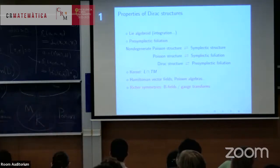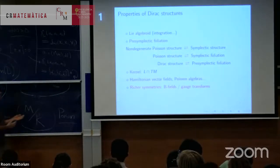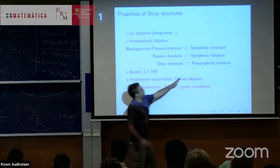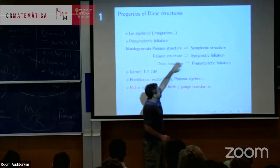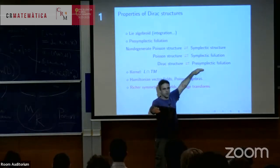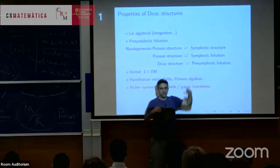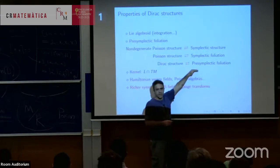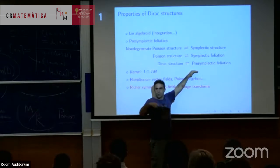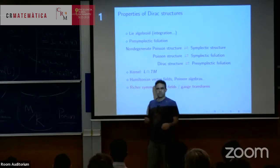There's a natural action of closed two-forms on T plus T* that preserves both the pairing and the Courant bracket, and therefore sends Dirac structures to Dirac structures — and sometimes Poisson structures to Poisson structures, if there's an additional invertibility condition. This is another source of examples of Dirac structures: you can B-field transform them. From the point of view of pre-symplectic foliations, this is just saying that if you view a Dirac structure in terms of leaves and two-forms along the leaves, and if you give me another closed two-form defined globally, I just modify the leaf-wise two-forms by adding B to it, keeping the leaves the same. This gives a new Dirac structure.